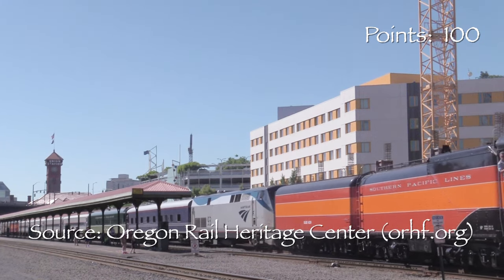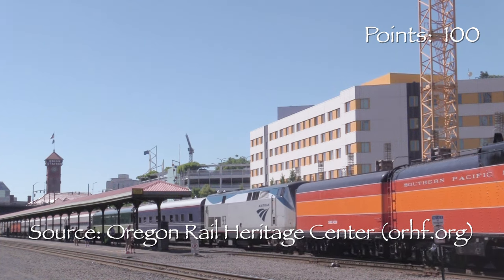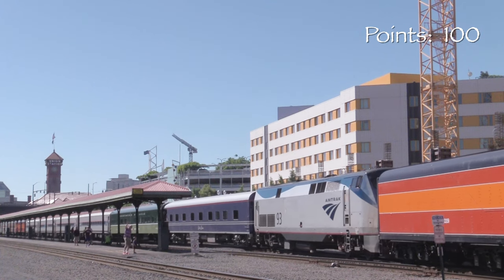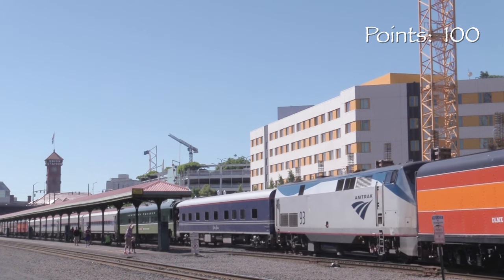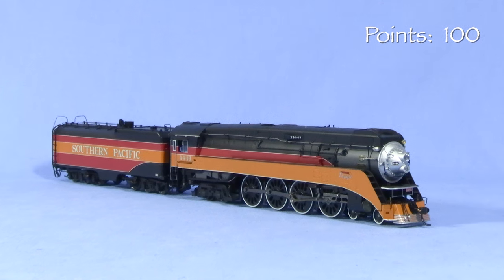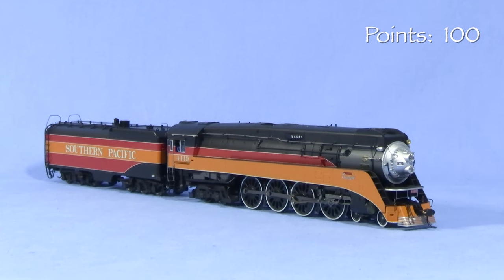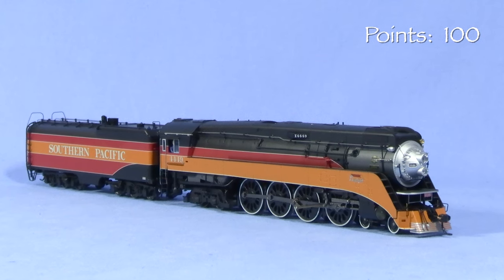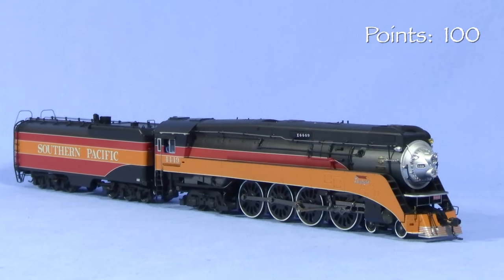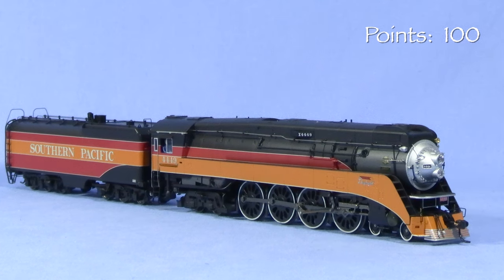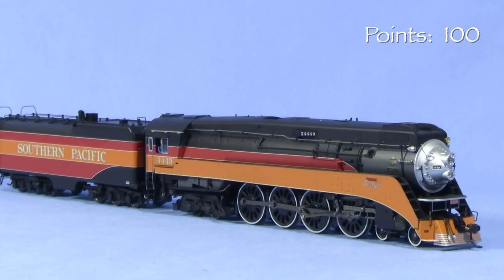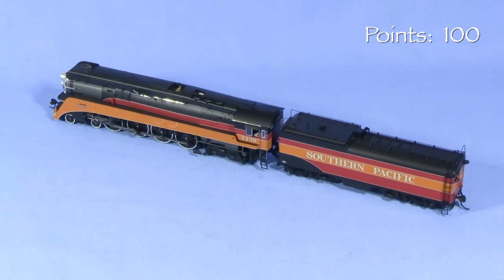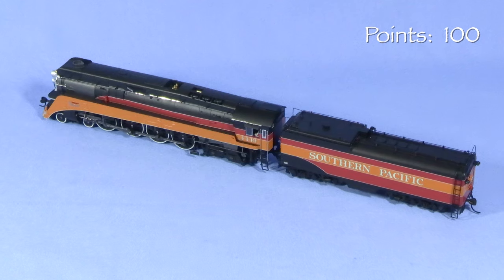Southern Pacific 4449 is a GS4 class 4-8-4 locomotive built in 1941. Some people count SP's semi-streamline GS class engines among the most beautiful locomotives ever built, and as an SP fan I can certainly agree with that. The locomotive has 80 inch driving wheels and a trailing truck booster. This oil burning steam locomotive can produce 5500 horsepower and is capable of speeds over 100 miles per hour. The locomotive was retired and placed in Oaks Park in Portland, Oregon in 1958 and remained there until 1974. It was restored as one of the locomotives to pull the American Freedom Train as part of the country's bicentennial celebration and has pulled other excursions since.